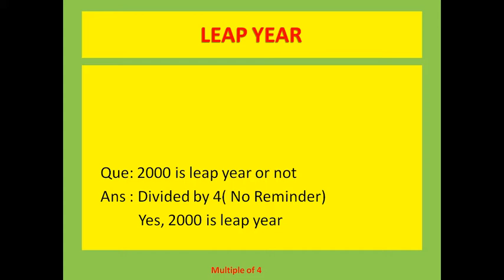2000 is divisible by 4, so 2000 is a leap year. You can see that leap years always come in multiples of 4. If 2000 is a leap year, then 2004, 2008, 2012 and so on will also be leap years.